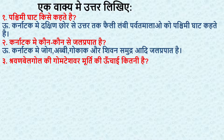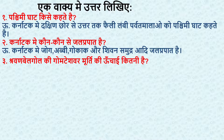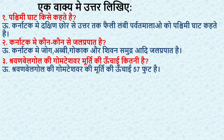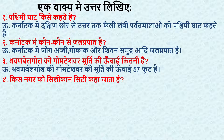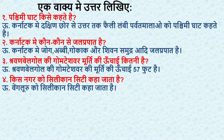Next — Shravan Belgola ki Gomteshwar moorti ki ucchai kitni hai? What is the height of Gomteshwar moorti in Shravan Belgola? Answer: 57 foot hai — the height is 57 feet. Next — Bengaluru ko Silicon City kaha jata hai. Bengaluru is known as Silicon City.